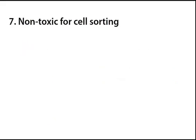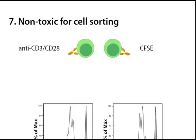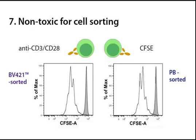BV421 conjugates can also be used for sorting live cells. Mouse cells stained with BV421 or Pacific Blue conjugated to anti-CD4 were sorted, CFSE labeled, and then stimulated with anti-CD3 CD28. Analysis of CFSE dilution upon cell division revealed that BV421 stained and sorted cells were fully responsive to activation, demonstrating that it is no more toxic than Pacific Blue.